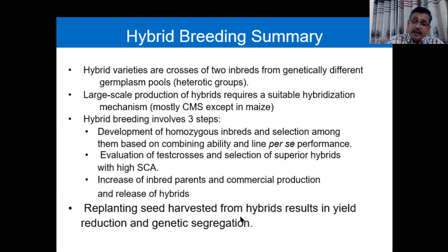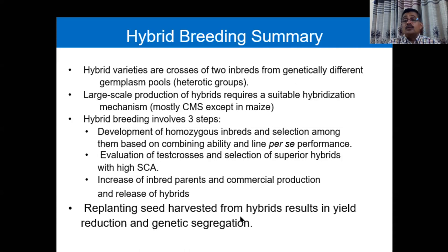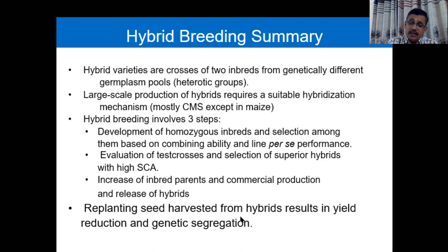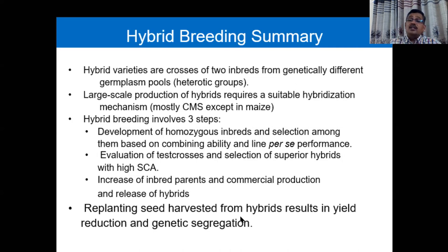In hybrid breeding, the two inbreds crossed must be genetically different from diverse germplasm pools. If you use closely related inbreds, the F1 will not be heterotic. Similarly in human genetics, marriage between two diverse families gives more heterotic individuals, whereas inbreeding leads to inbreeding depression and expression of unfavorable alleles — causing genetic disorders. So genetic diversity is essential for large-scale seed production of superior hybrids.